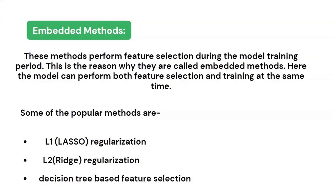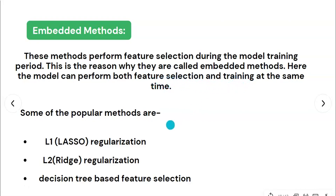The next method is embedded methods. These methods perform feature selection during the model training period, which is why they are called embedded methods. The model can perform both feature selection and training at the same time. The first is lasso regression, which uses L1 regularization, and the second is ridge regression, which uses L2 regularization.